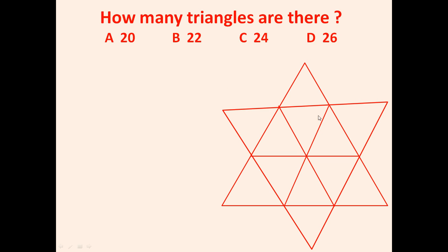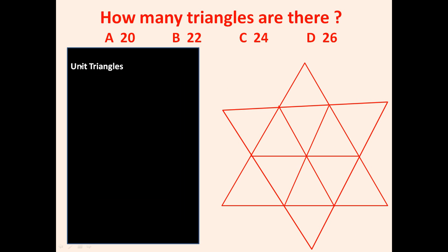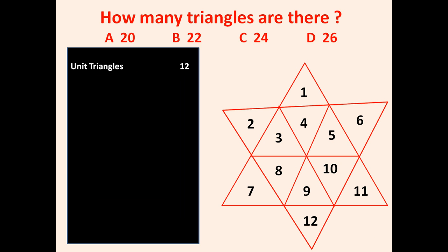To count the number of triangles in the figure, first let us count the unit triangles. This figure is made of 1, 2, 3, 4, 5, 6, 7, 8, 9, 10, 11, 12 — it means this figure is made up of 12 small triangles, or 12 unit triangles.